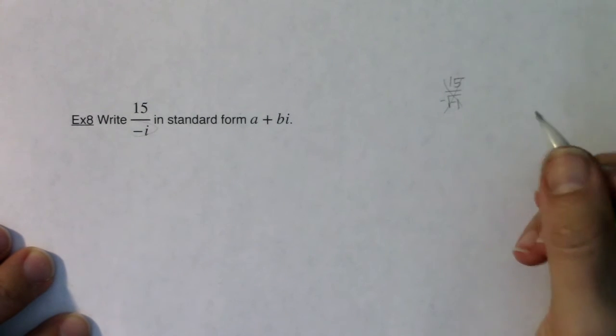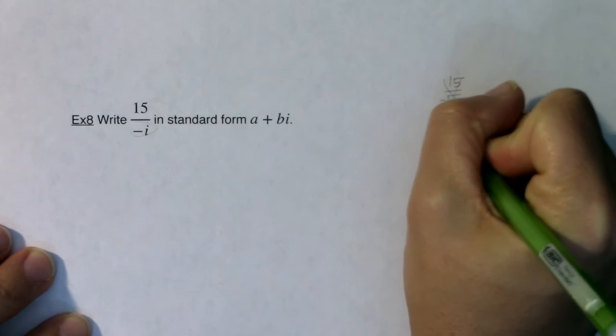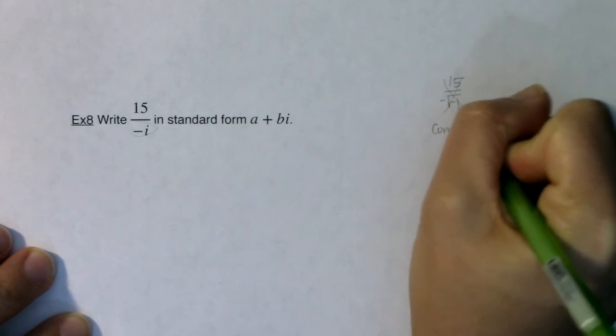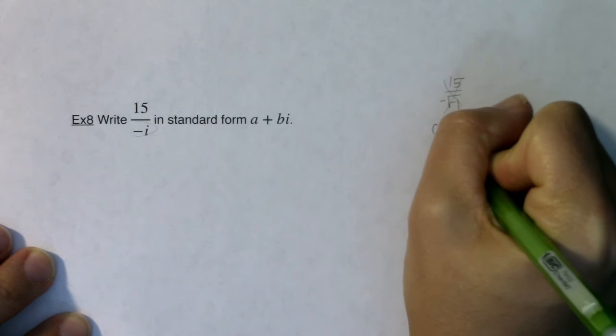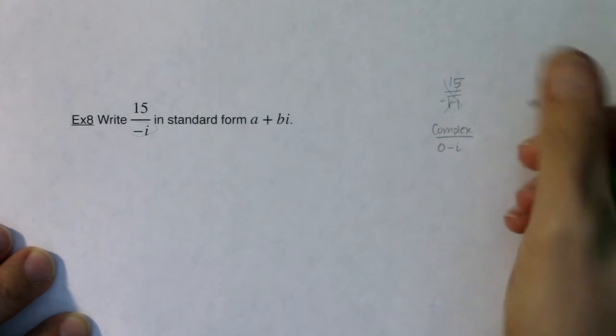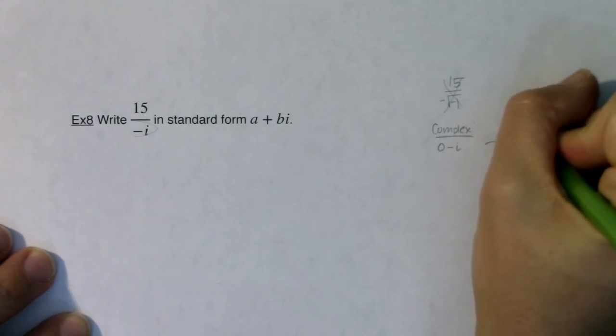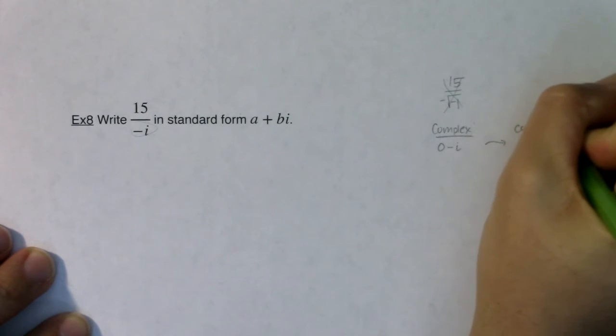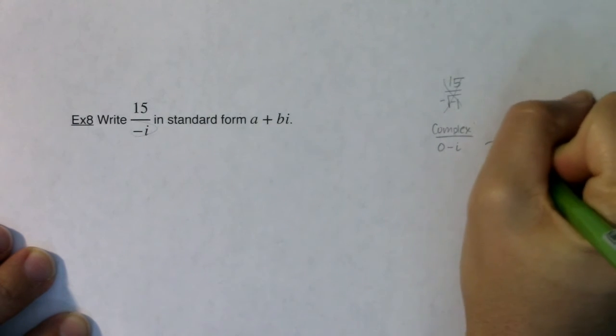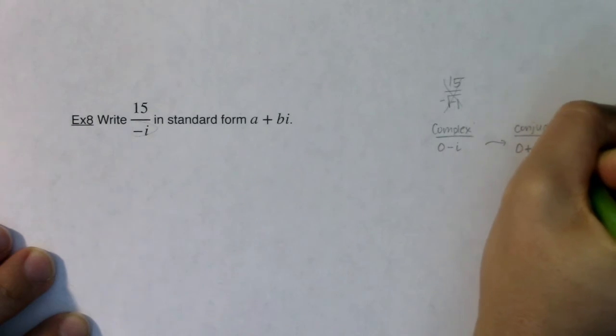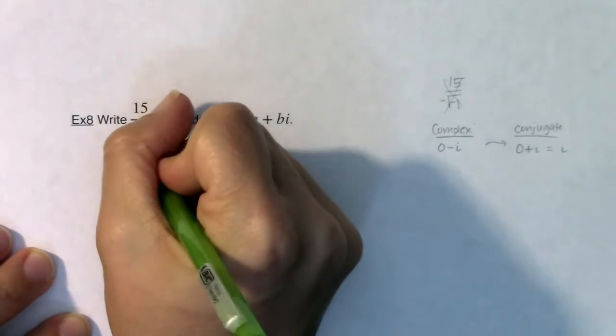Keep in mind, if we look at our denominator, it's technically a complex number. I would say it was zero minus i. If I want to get its conjugate, its conjugate would be zero plus i, and I'm just going to write that as i.